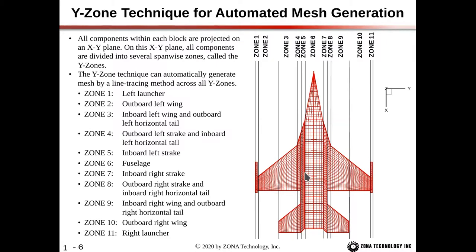After projecting the components onto the XY plane, we split it into multiple Y-zones where each component is in a different zone. Zone one has just the launcher. Zone two has a portion of the wing — because of the tail, we put a Y-zone boundary at the boundary of the tail. Zone three has the inboard wing and a portion of the tail. Zone four has another portion of the wing and the inboard tail. Zone five has the strake, running from the leading edge of the wing to the trailing edge of the tail. Zone six contains the fuselage, and then we mirror onto the right-hand side for zones seven through eleven.